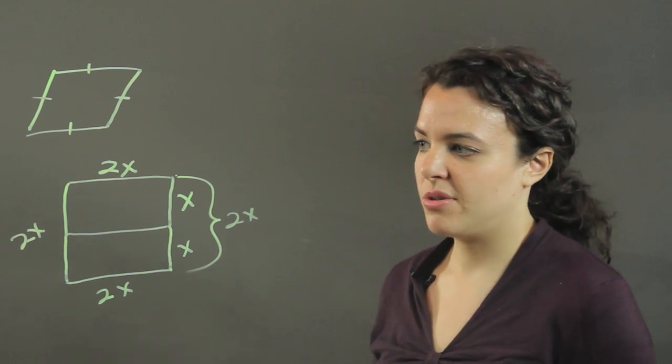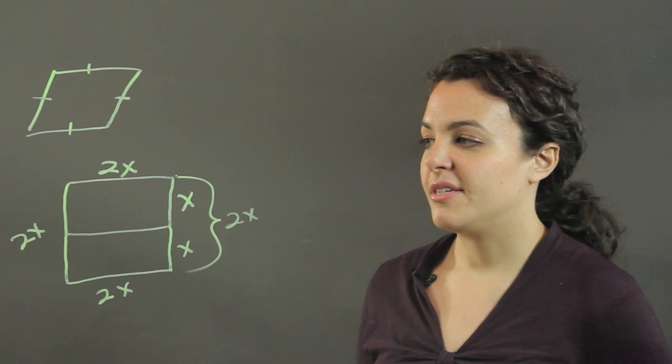And what we've also got is a specific kind of rhombus—it's a square.